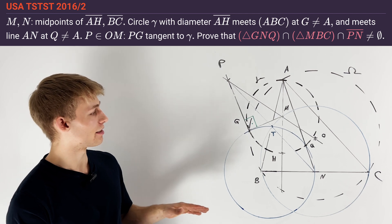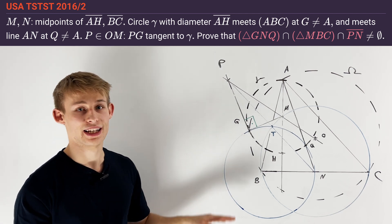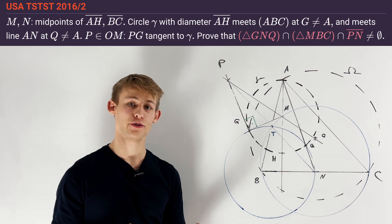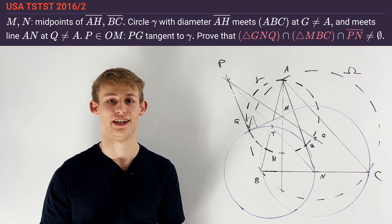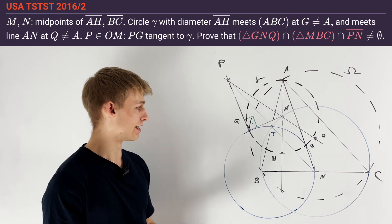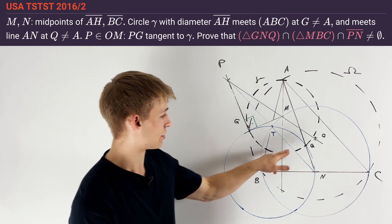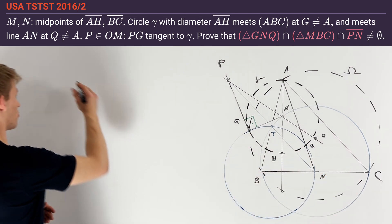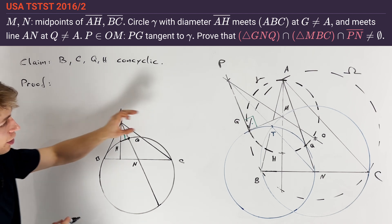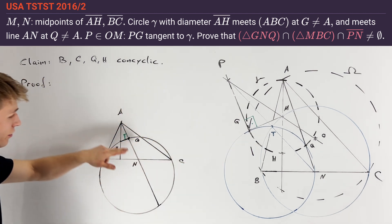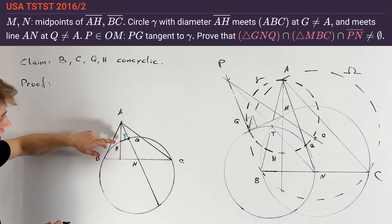I have chosen to present this problem because several points in this configuration also appear in other problems. I want to start by figuring out properties of these points that can also be useful in general. First, we consider point Q, also known as the Humpty point. In particular, it is known that it lies on the circle BHQC, which is the first claim I want to prove. Since Q was defined as the intersection of circle gamma with line AN, we know that angle AQH is a right angle.